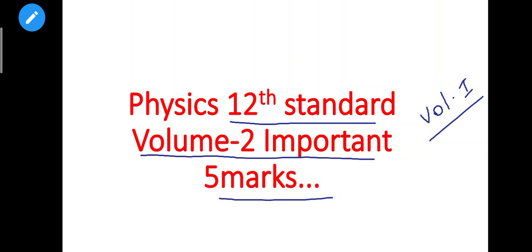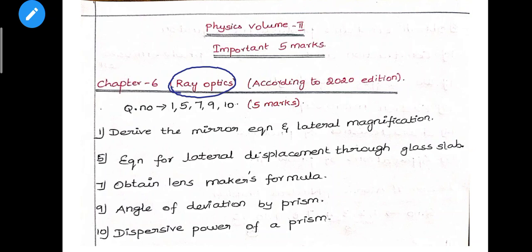You can comment on any doubt. So in this video, Chapter 6 - Optics. This is the new edition. Semiconductors and communication system are also in the new edition. If you are following the old edition, please check your questions. First, Lesson 6 - Ray Optics. Question numbers 1, 5, 7, 9, 10.